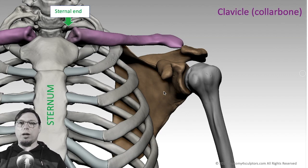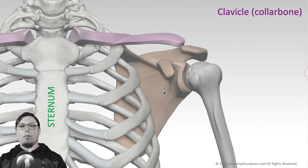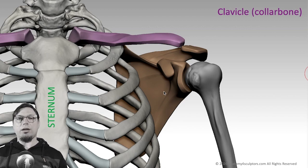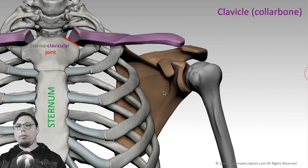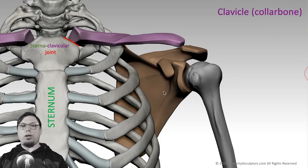The medial end of the clavicle is called the sternal end, because it's connected to the chest bone, or the sternum. I made a simplified and easy-to-understand model of the collarbone, because the form of the clavicle is fairly complicated. The joint between the sternum and the clavicle is called the sternoclavicular joint — that's the only real joint where the upper limb is connected to the trunk.